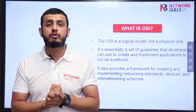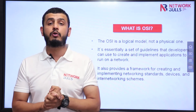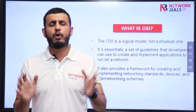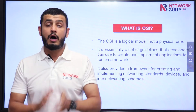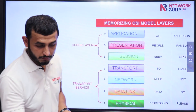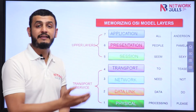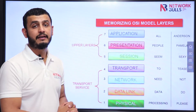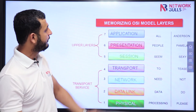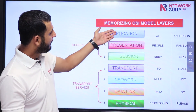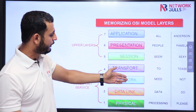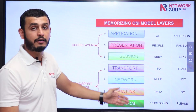The OSI model is divided into seven layers. In this video, I will tell you how you can memorize those seven layers. There are seven layers. If you want to remember them from top to bottom: Application, Presentation, Session, Transport, Network, Data Link, Physical.